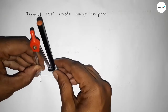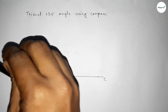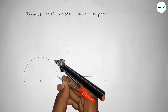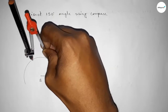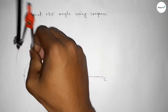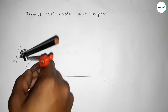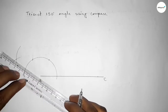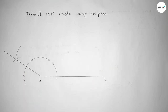Putting the compass on point B, taking any length, and drawing an arc. Now putting the compass here and taking the same length, cutting here, then cutting here again. Putting the compass here and cutting here, drawing an arc, and cutting here — so both curves intersect at a point.